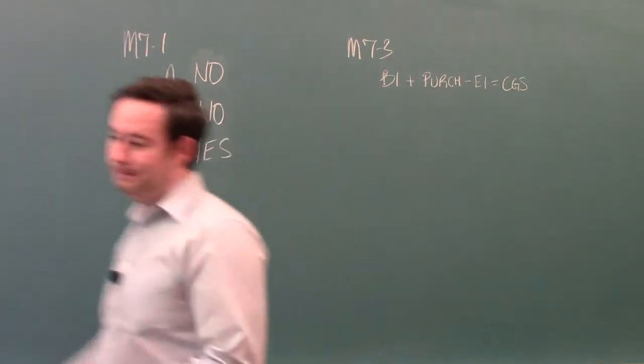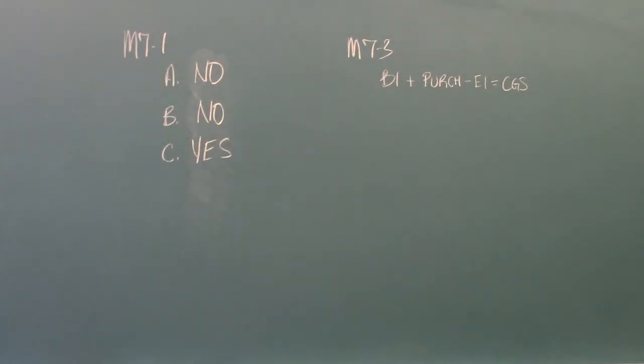Let's go to M73. M73 says Dillard's operates 308 department stores located in 29 states. It says that on January 29, 2011, the company reported cost goods sold of $3.976 million, ending inventory for the current year, and $1.29 million for ending inventory. Ending inventory for the previous year was $1.3 million. Is it possible to develop a reasonable estimate of the merchandise purchases for the year?